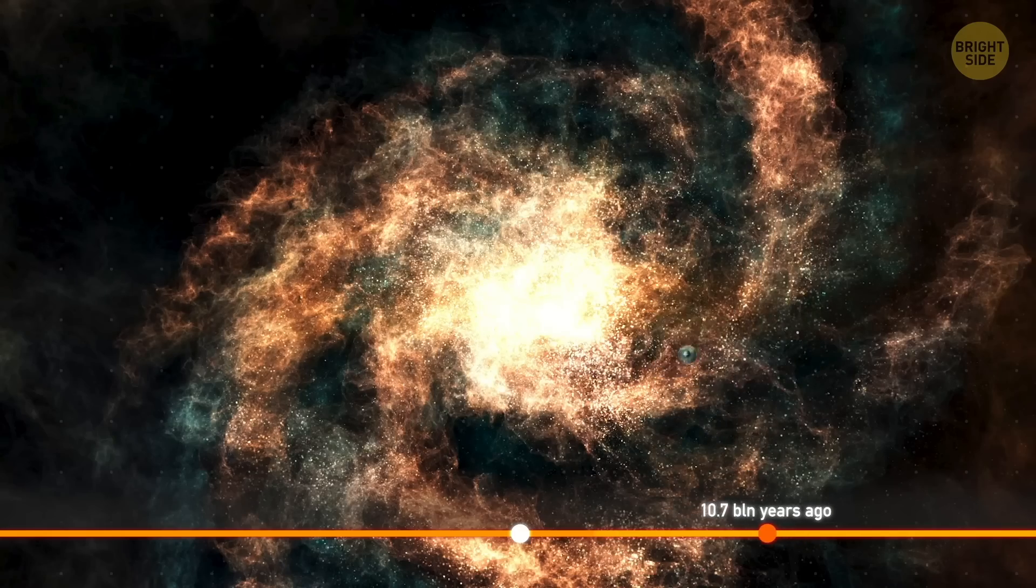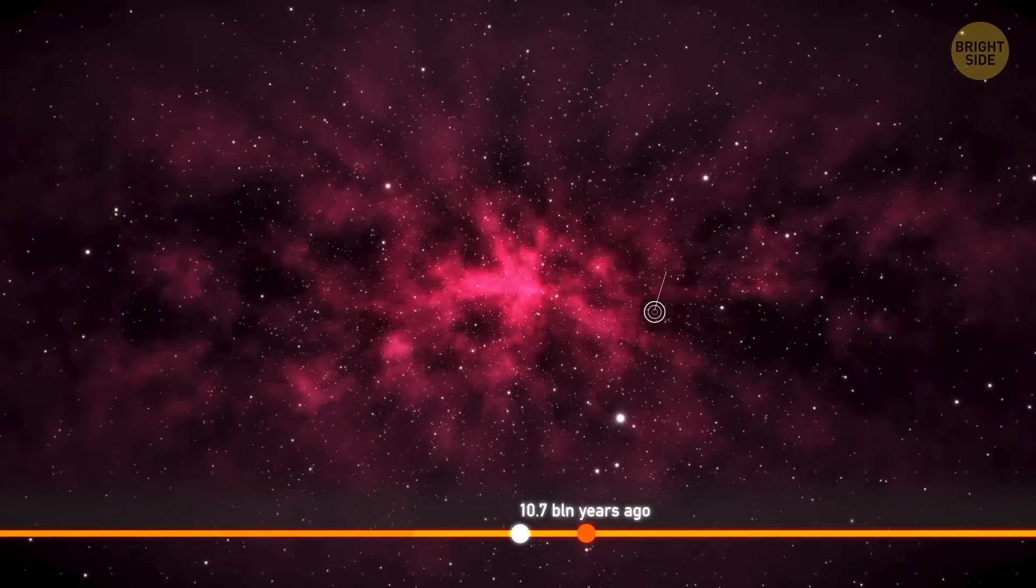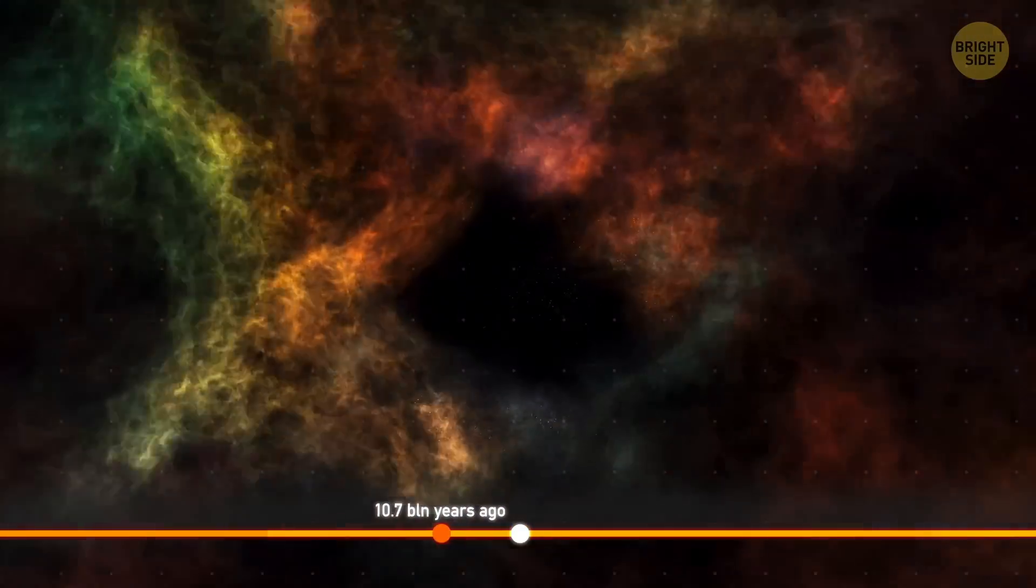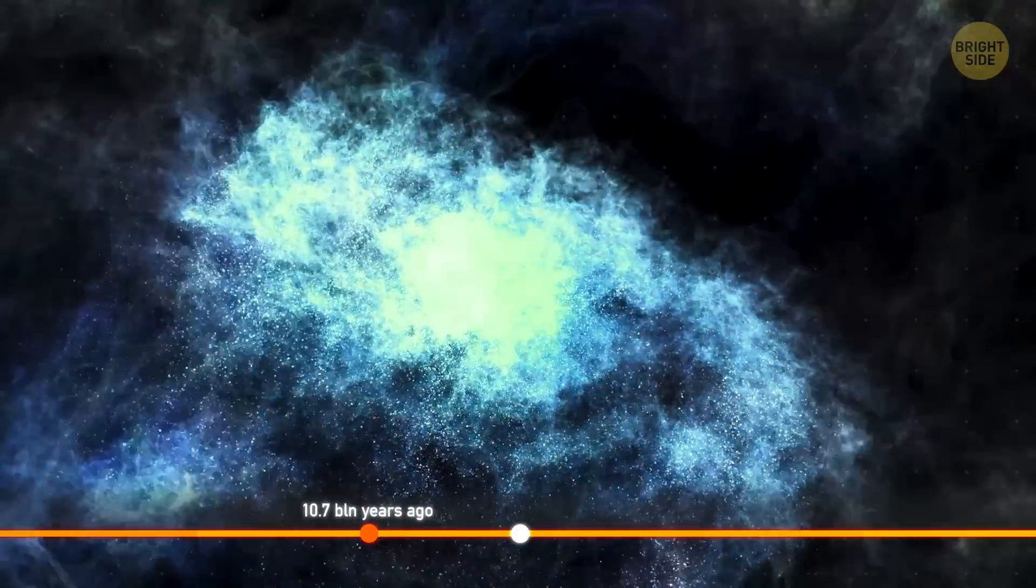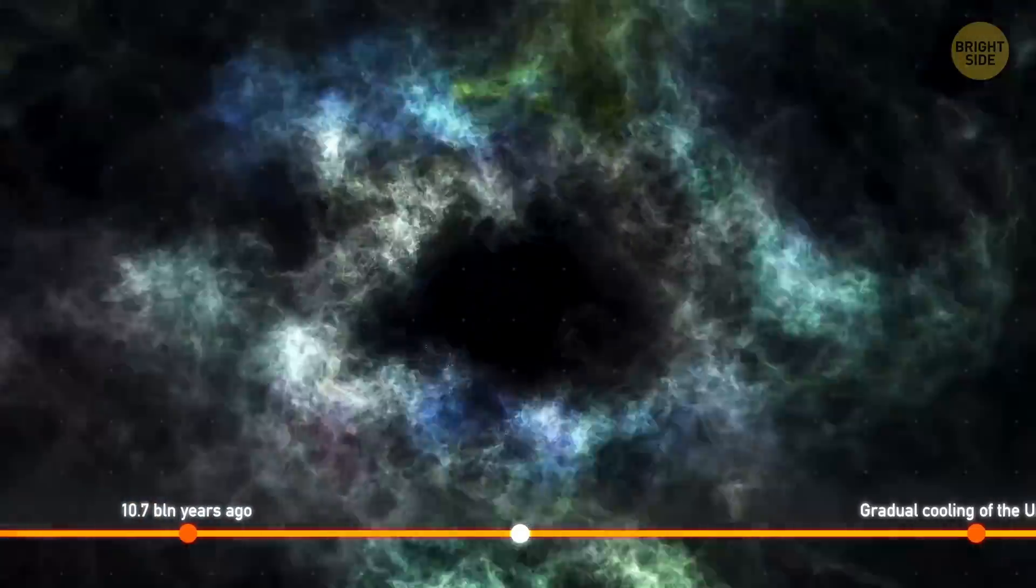Although spiral is the most common type of galaxy out there, we know the name of probably the oldest one. It's BX442, whose light reaches us across 10.7 billion years. At about the same time, the rate at which stars were appearing across the universe reached its peak.